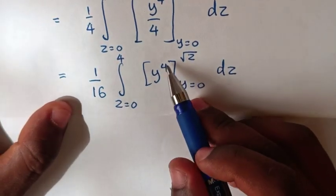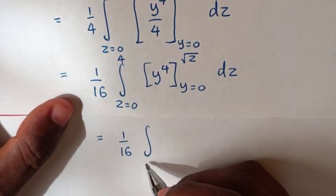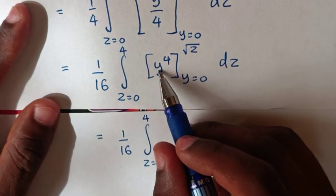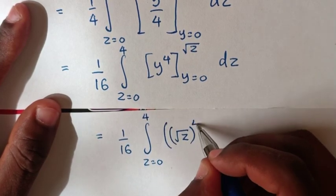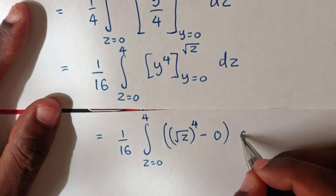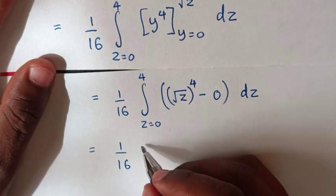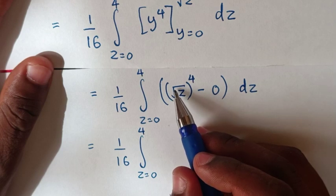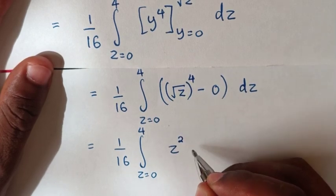In the next step we substitute these limits into y⁴. So this will be equal to 1 over 16, integral from z equals 0 up to 4. When we substitute square root of z into y, here it will be (square root of z)⁴ minus, substituting y equals 0, it will be 0. Then: power 4 — square root is 1/2 times 4 equals 2 — so it will be z² minus 0, which is z².